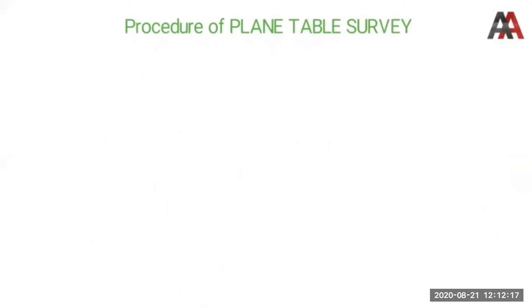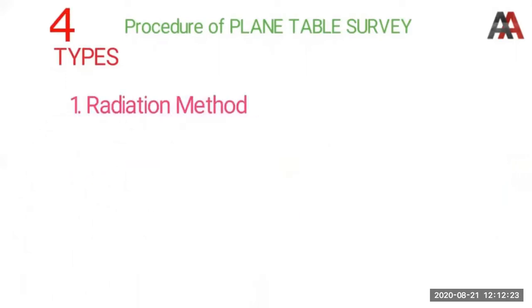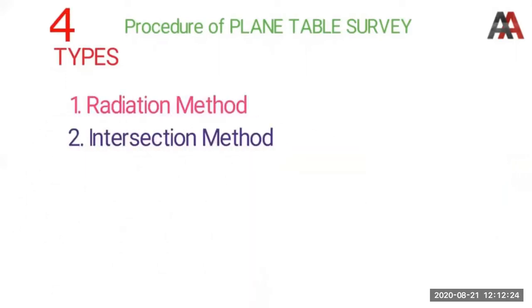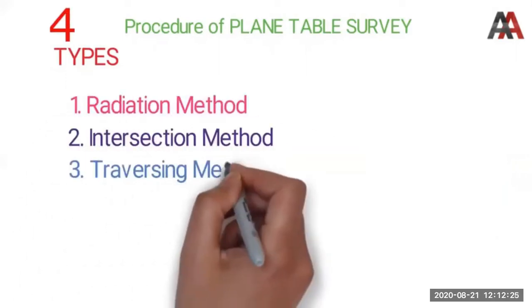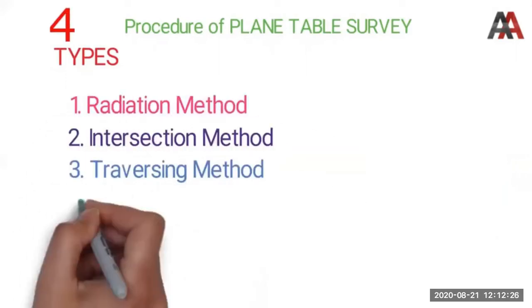Now let's talk about the plane table survey procedure. There are four methods in plane tabling: first, radiation method; second, intersection method; third, traversing method; and fourth, resection method.